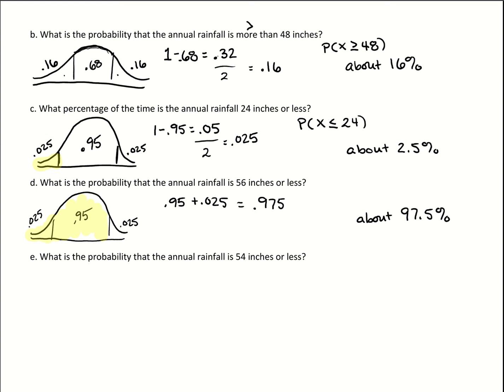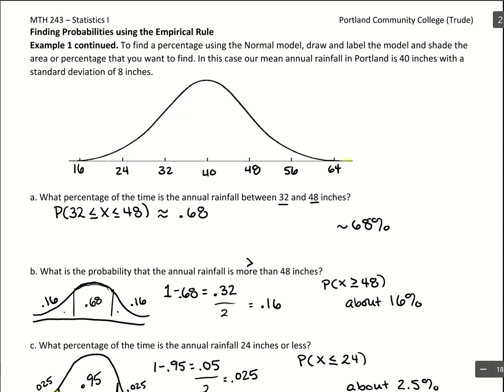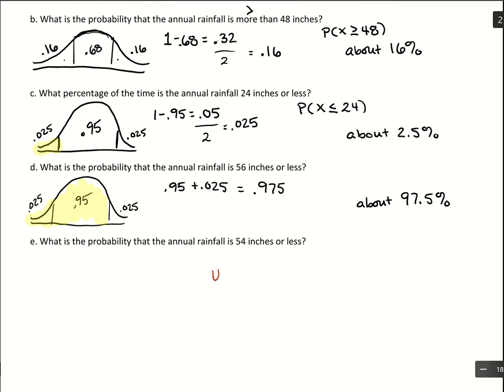This last question asks: what's the probability the annual rainfall is 48 inches or less? This gets us off the standard deviation marks — it's asking about a value that isn't exactly a whole number of standard deviations away. At this point, we can't get an exact value using the empirical rule. This is where technology comes into play, showing that the empirical rule is great when landing on exact standard deviation values, but that's not realistic in the real world. To find that area, we'll need to use technology, which we'll go over in the next video.